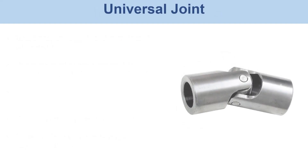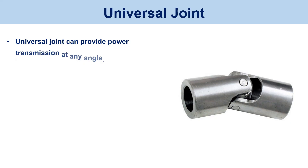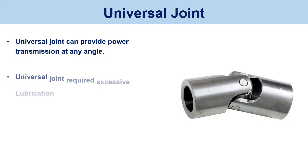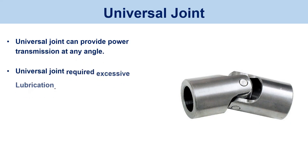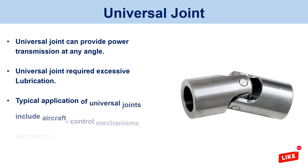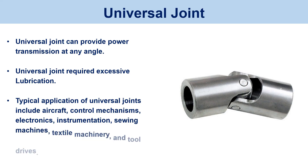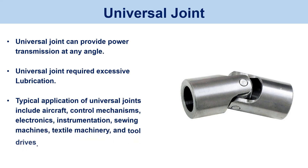Universal joint. Universal joints can provide power transmission at any angle. Universal joints require excessive lubrication. Typical applications of universal joints include aircraft control mechanisms, electronics, instrumentation, sewing machines, textile machinery, and tool drives.